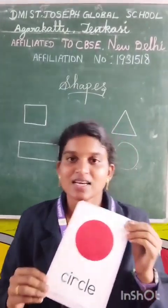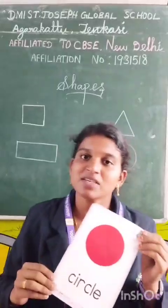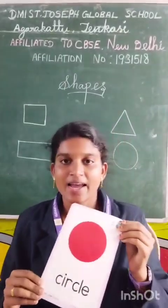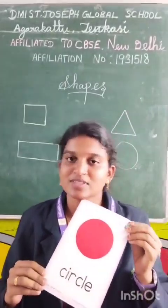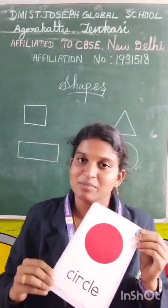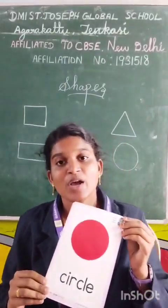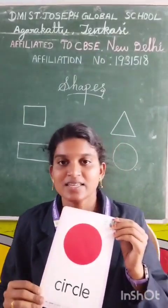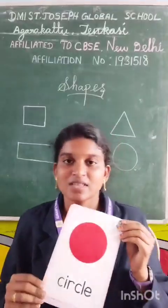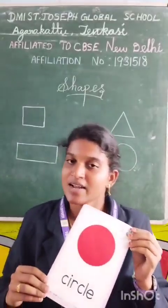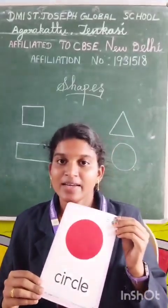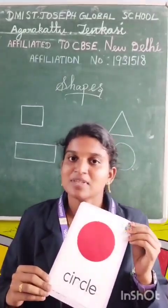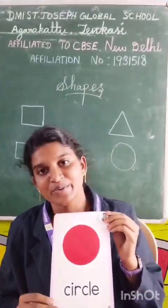Once again, I am a circle. Once again, I am a circle. I go round and round. I have no sides. I am a circle, round and round.